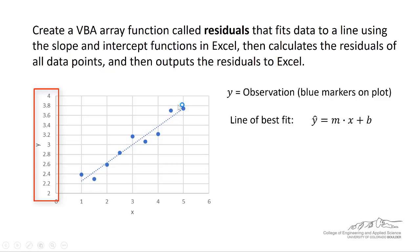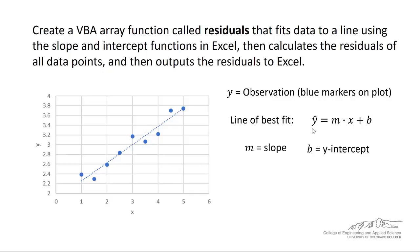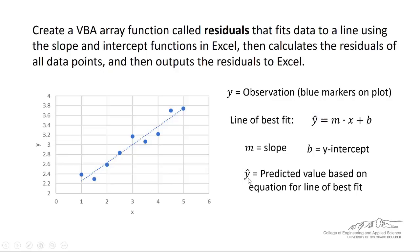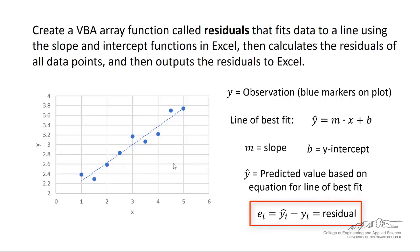Y is the observation. We have the line of best fit, which is the blue dotted line here. The slope is m, b is the y-intercept, and y-hat is the predicted value based on the equation for the line of best fit. We can calculate the predicted value for each value of x — we have a total of nine of those. Then we're going to create the residuals for each of those nine different points. The residual for each point is just the difference between the prediction and the observation, and that's what we want to output as a vector.